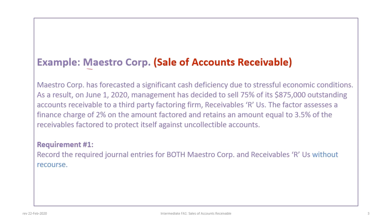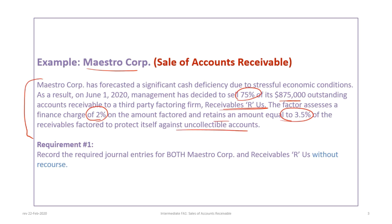This tutorial relies on the Maestro Corp example. It is not necessary to download the accompanying file — you can if you like, as all the information is presented here as well. In this situation, Maestro Corp wishes to sell 75% of its receivables, currently at $875,000, to a factoring firm. The factor assesses a finance charge on the amount factored and retains an amount equal to 3.5% to protect itself against uncollectible accounts. The first requirement is to record the journal entries for both parties — Maestro and Receivables Are Us — without recourse.